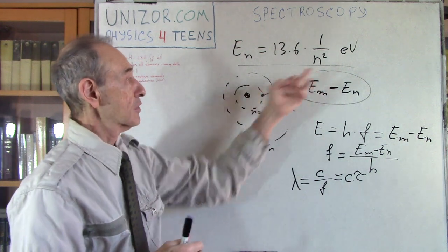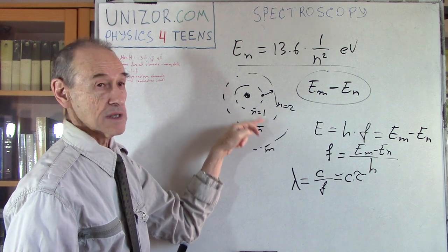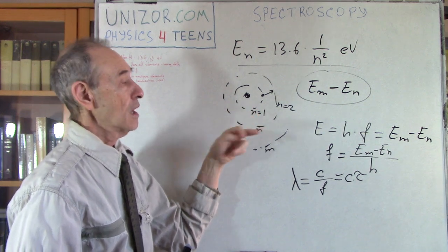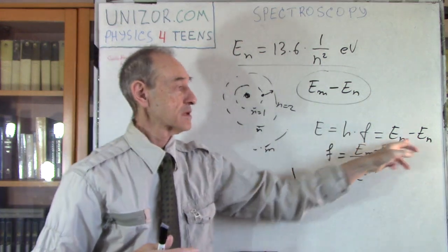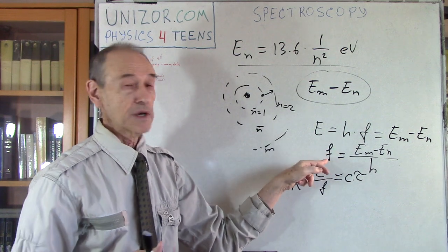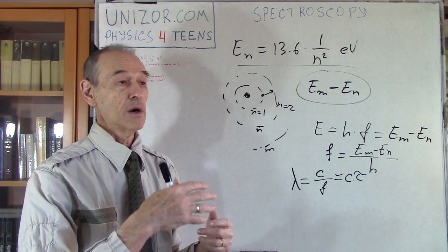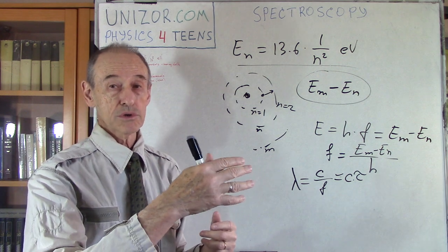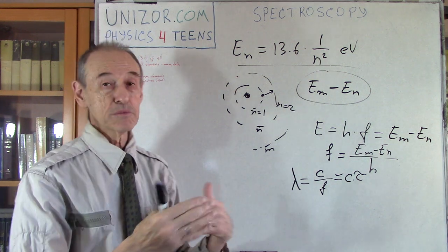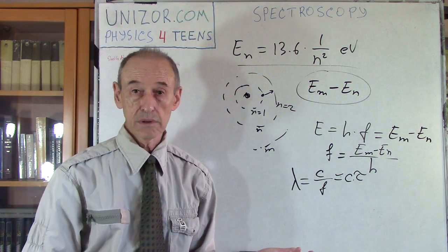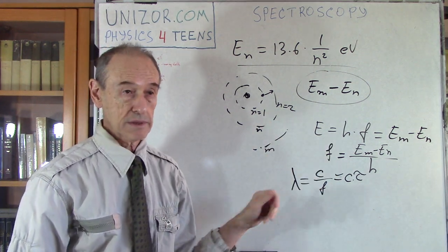Whenever you go closer — when the electron jumps between, say, shell number two and shell number one — we will have a bigger difference between the energy levels. So the frequency becomes greater and it actually falls into visible light, or might even go into ultraviolet light. Somewhere in between there are even visible frequencies and wavelengths of the light.